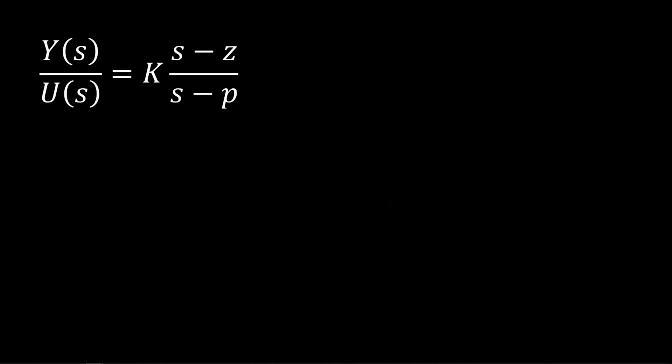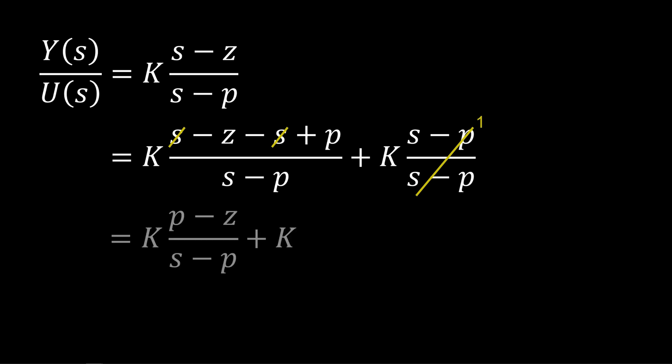Another way we could approach this is to recognize that the compensator can be separated into the sum of two terms. Then, simplifying, we get that C of S is the sum of a strictly proper portion, the first term, and a steady state term.